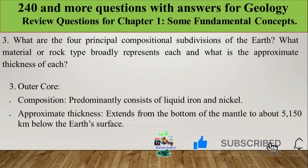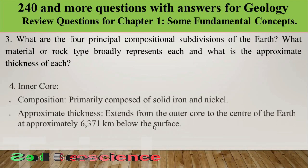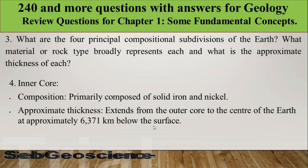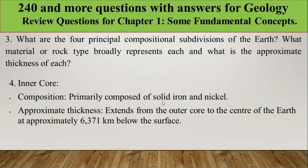The third compositional subdivision is the outer core, which consists of liquid iron and nickel. Its approximate depth extends to around 5,150 km from the surface. The fourth subdivision is the inner core, which is also composed of iron and nickel but is solid rather than liquid.